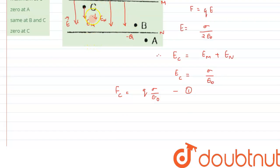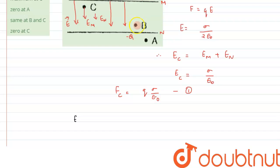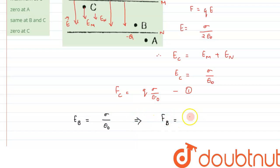The electric field is confined within the region between the plates and is uniform throughout that region. So the electric field at C and B is the same. Similarly, if the particle is at point B, the electric field will still be σ/ε₀. Therefore, the force on the particle at B will also be qσ/ε₀ — the same as at C.